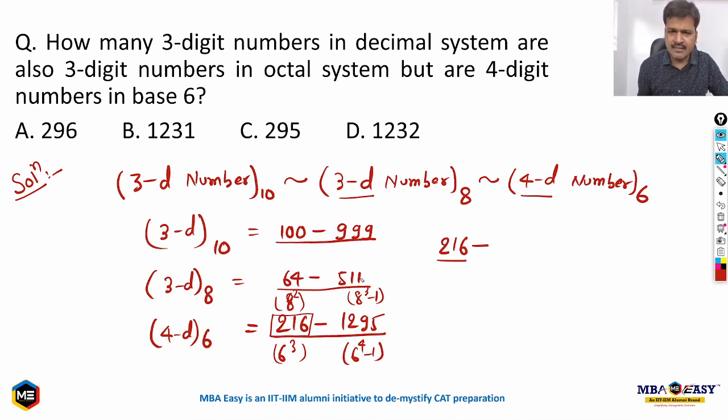Now look at the upper limit: 999, 511, 1295. If you take 1295 as the last number in the range, 1295 does not fall in these two ranges. From here you take the smallest number, which is 511. Now 511 is in this range also, 100 to 999, and in the third range, 511 lies between 216 and 1295. So my common range is 216 to 511.